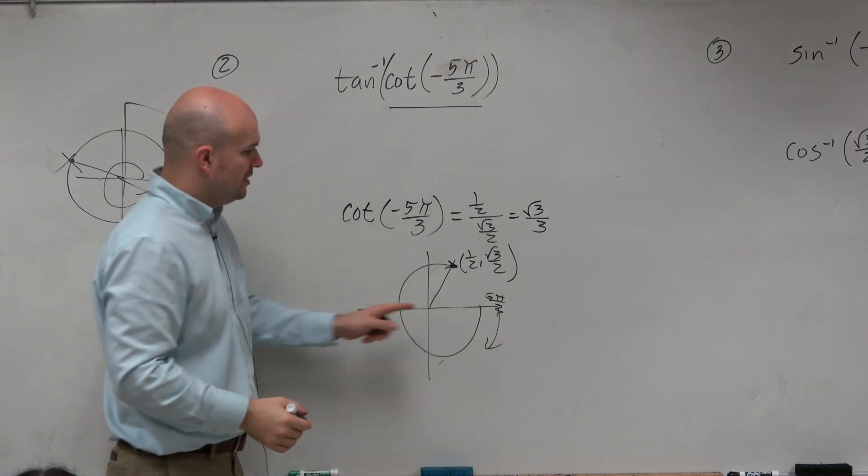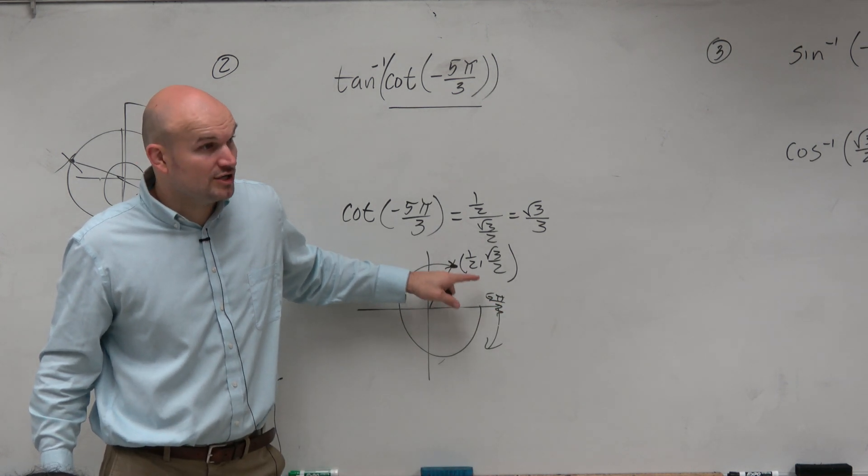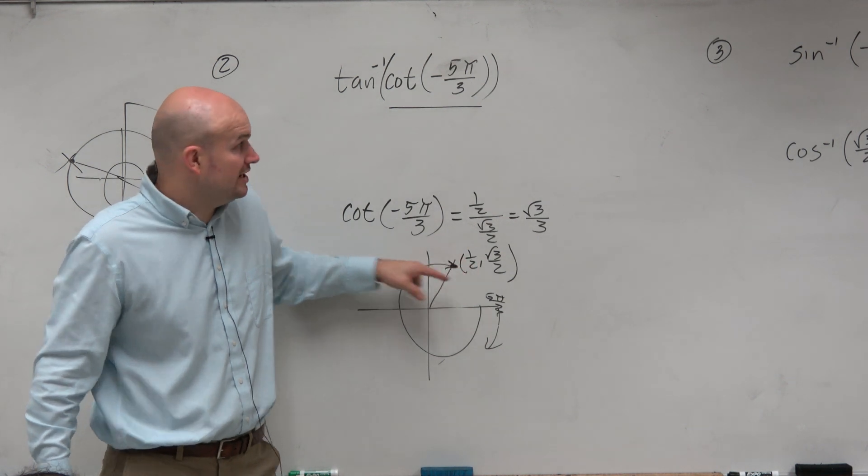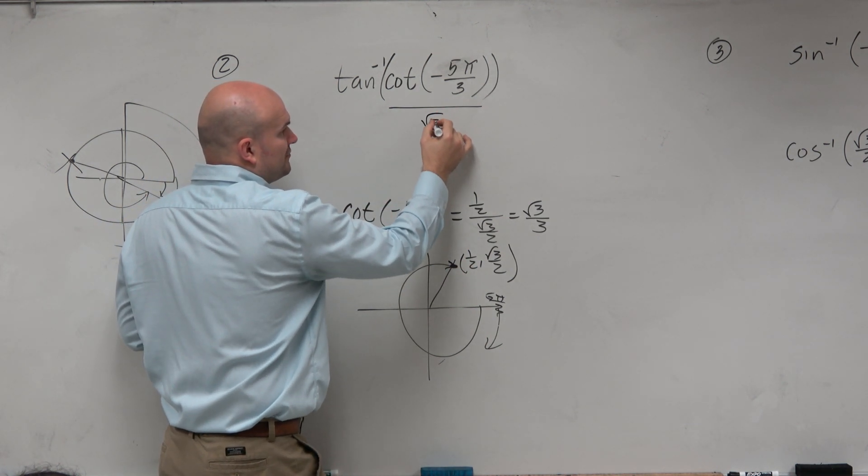Now, is it positive or negative? Well, the negative angle takes us to the first quadrant, where cotangent and tangent are both positive, right? So this answer is square root of 3 over 3.